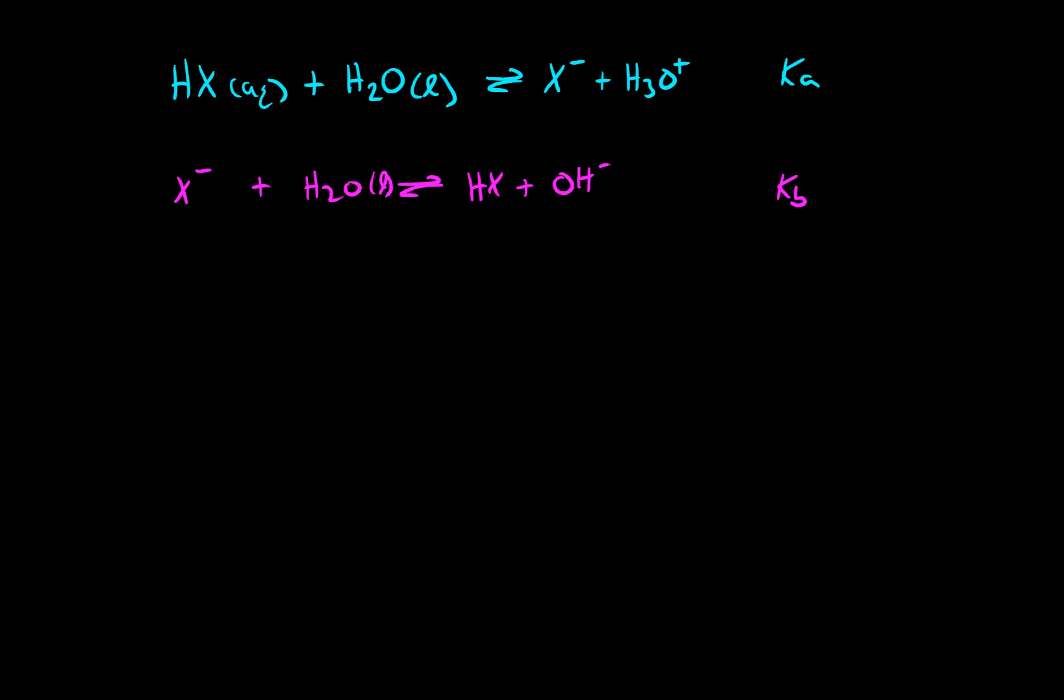So if we can predict that the products in a Ka reaction are more stable than the reactants, then we would predict this to be a pretty good acid because if the products are more stable, that means we are more likely to favor products and create a higher concentration of hydronium.